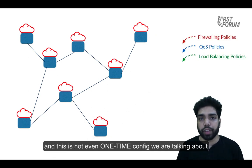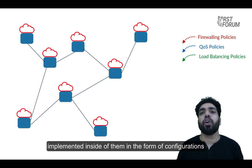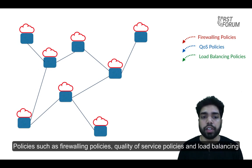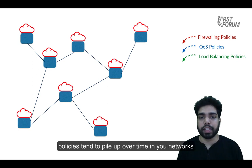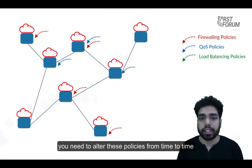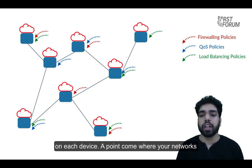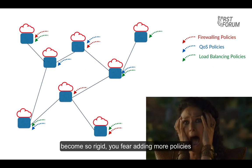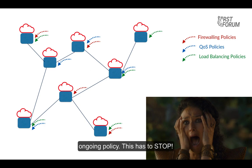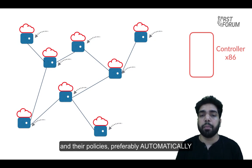And this is not even one-time config we are talking about. Large networks carry a large number of policies implemented inside of them in the form of configurations. Policies such as firewalling policies, quality of service policies, and load balancing policies tend to pile up over time in your networks. And since your business today is so fast-paced, you need to alter these policies from time to time — again, individually and usually manually on each device. A point comes where your networks become so rigid, you fear adding more policies thinking it might affect some other ongoing policy. This has to stop. There has to be a better way to manage these large numbers of devices and their policies, preferably automatically.